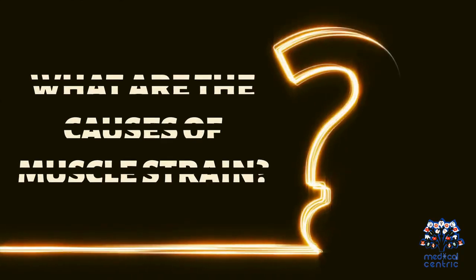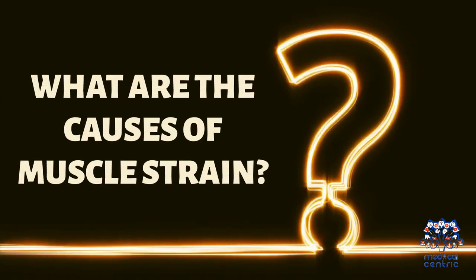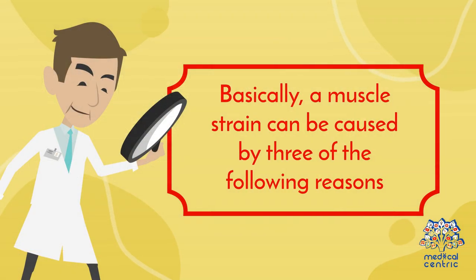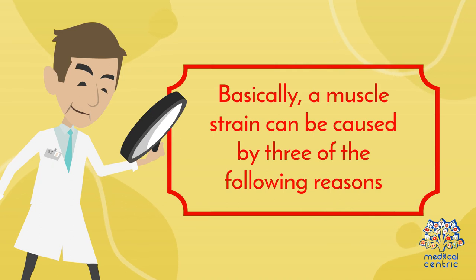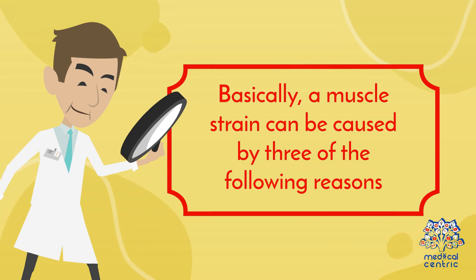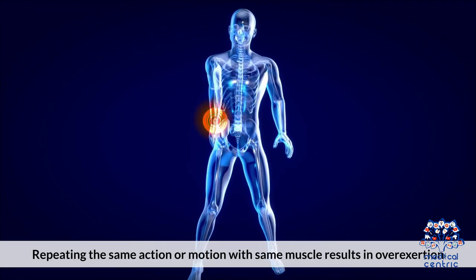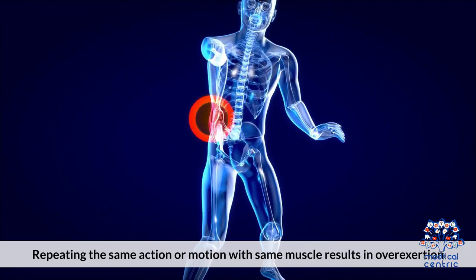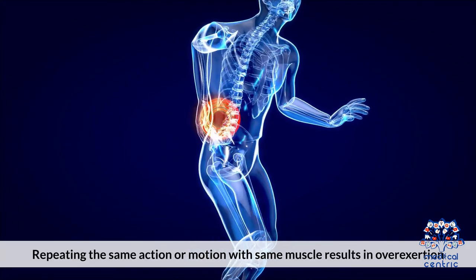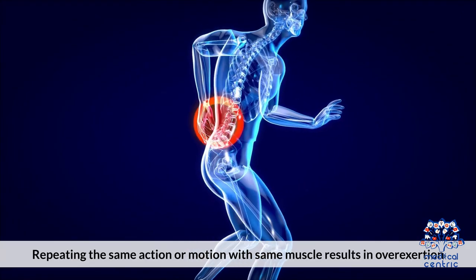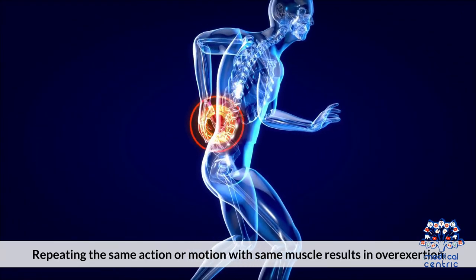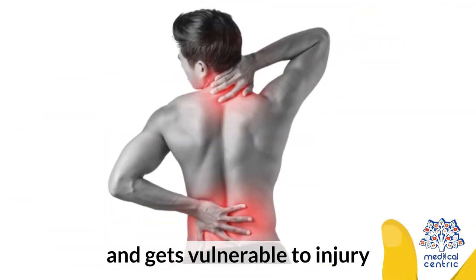A muscle strain can be caused by three of the following reasons. One, overuse of muscle. Repeating the same action or motion with the same muscle results in overexertion and becomes vulnerable to injury.